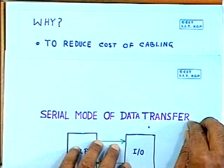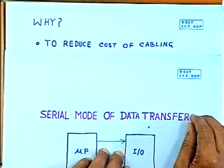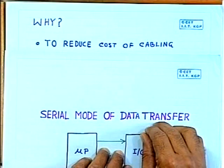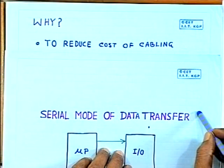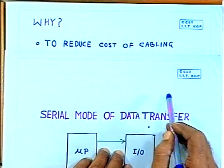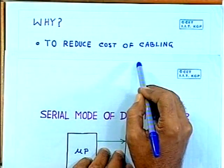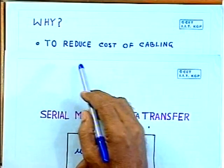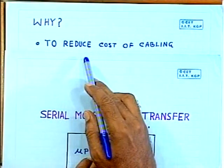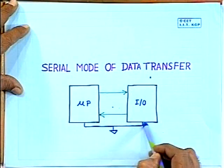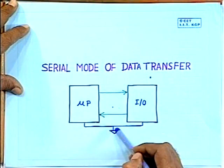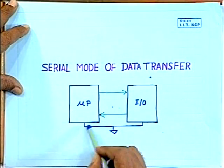Whenever the equipment — the IO device — is not housed in the same box, it is a little away from the CPU or computer. Then the cabling cost: you have to use a cable to connect the IO device to the microcomputer, and the cost of the cable will be more if you use parallel lines. On the other hand, if you use a serial line, you require only a pair of wires and a common ground line — so only three wires need to go from the microcomputer.